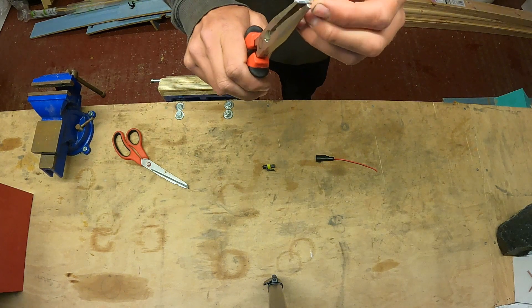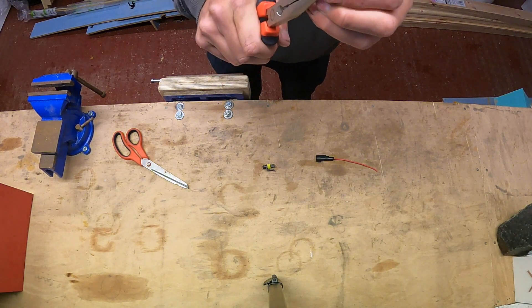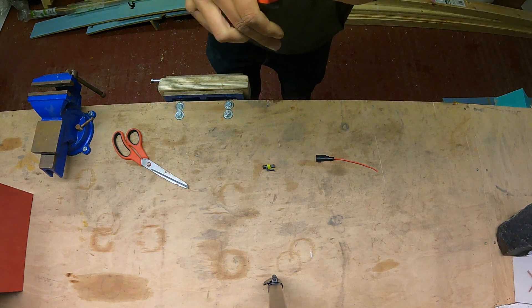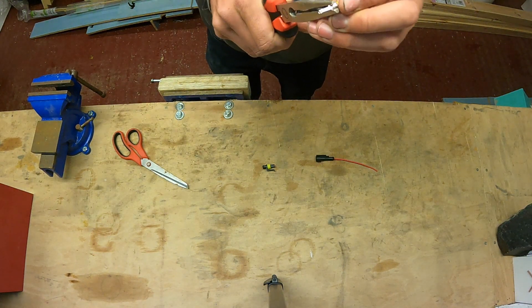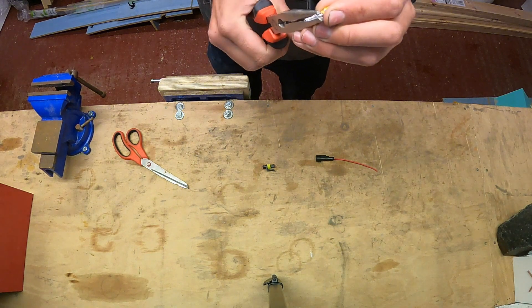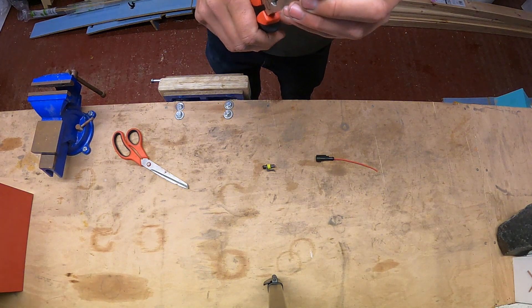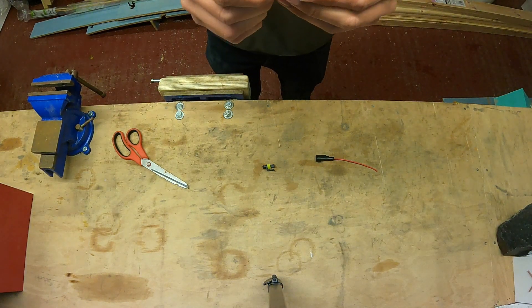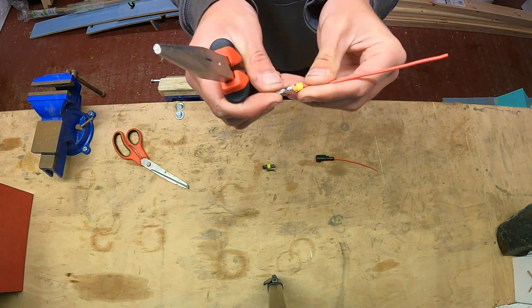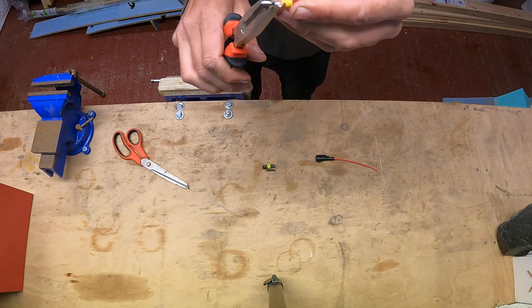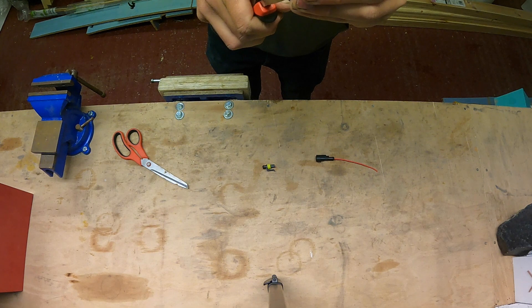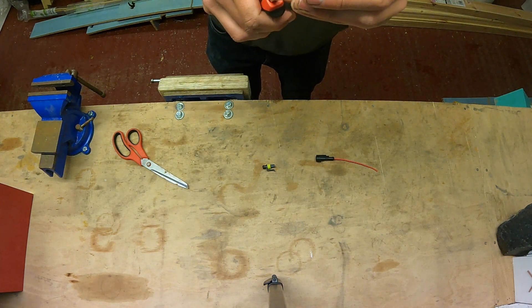Then just take some pliers or get a crimping tool and gently crimp that into position. You can be fairly firm with crimping the shorter metal tabs onto the exposed metal. Give that a good squeeze. That's nice and strong there.